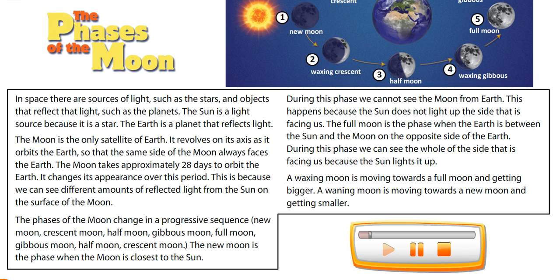The Phases of the Moon. In space, there are sources of light, such as the stars, and objects that reflect that light, such as the planets.